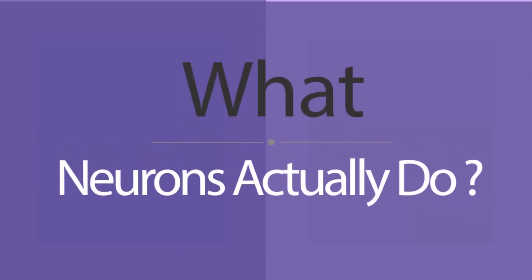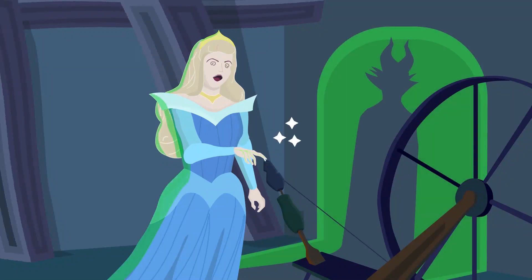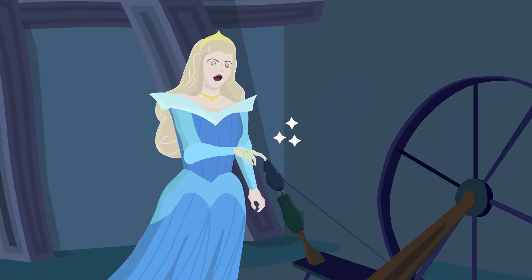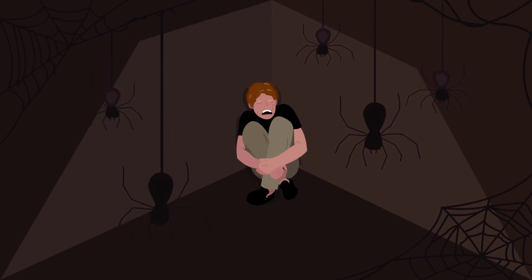But what do neurons actually do? Neurons generate electrical signals, we can go fancy and name them action potentials that are transmitted over long distances to make you feel something, think of a particular thought,